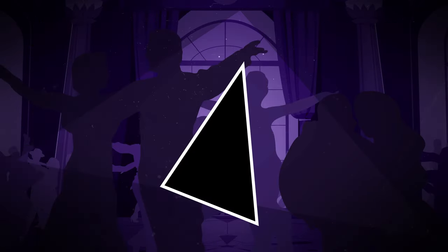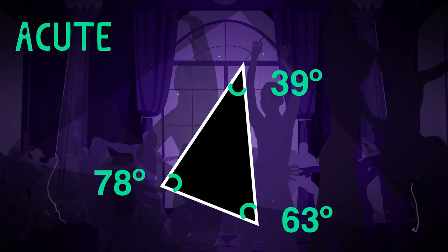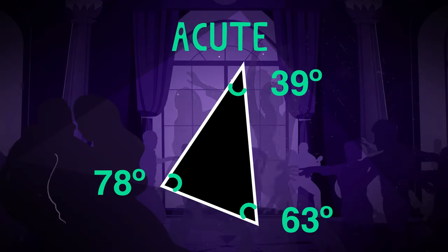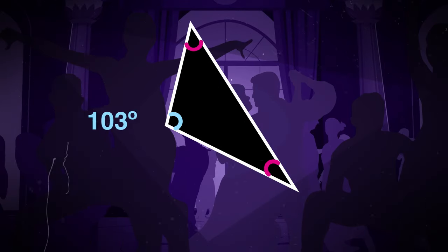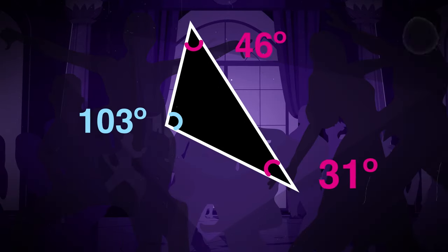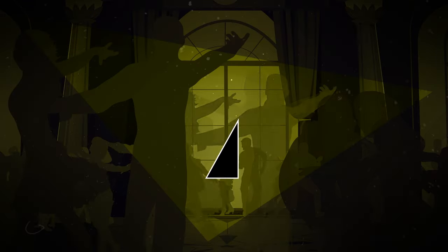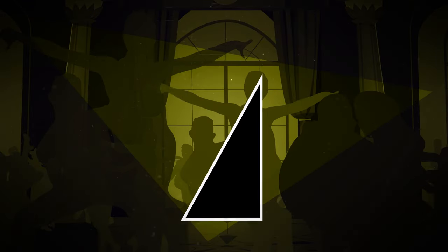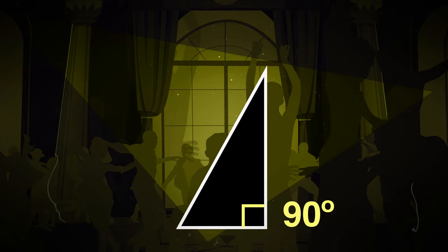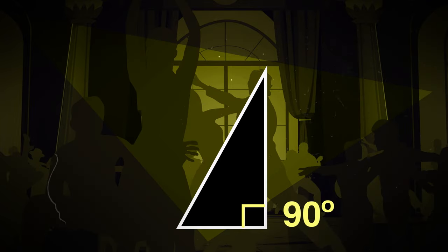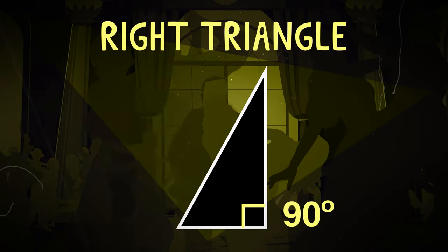If all angles are less than 90, we call it acute. If an angle is greater than 90, we call that obtuse. A triangle with an angle of precisely 90 degrees — it's called a right triangle.